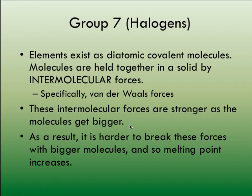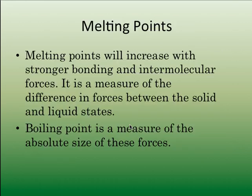To summarize for group 7: elements exist as diatomic covalent molecules, and those van der Waals or London dispersion forces get stronger as the molecule gets bigger due to increased polarizability of the electron cloud. So for bigger molecules it is harder to break those intermolecular forces, and the melting point increases going down with halogens.